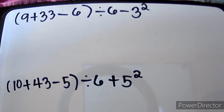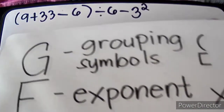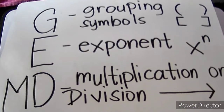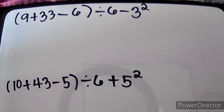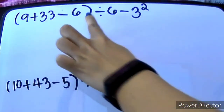Another example — but this time, we already have our grouping symbol. On this case, we only have a parenthesis — wala tayong bracket. And we also have an E, which stands for exponent. But between the G and E, sa GEMDAS rule, mauna nga munang gawin yung letter G. So, G muna tayo. And, dun sa ating example na to, ito yung ating G.